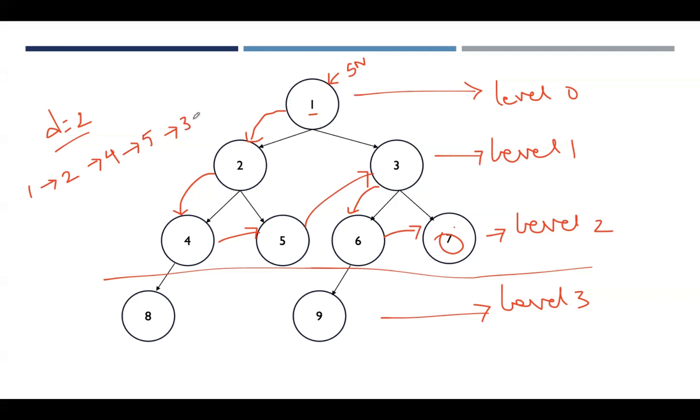7 is our goal node, so we can say that the search is successful as we reach the goal node. This is how we can solve the problem using Depth Limited Search.